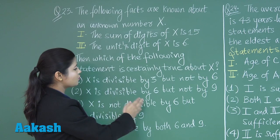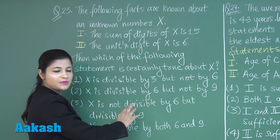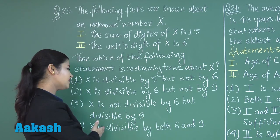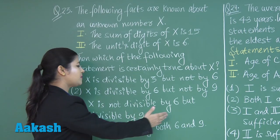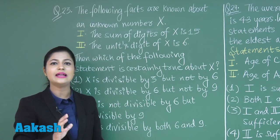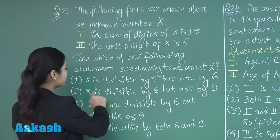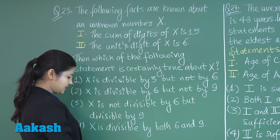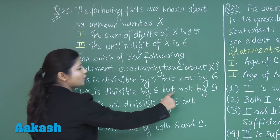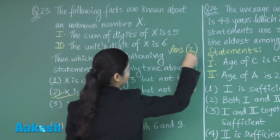Coming to option 3 — x is not divisible by 6 but divisible by 9 — this is not right because we know x is divisible by 6. The last option states x is divisible by both 6 and 9, which we cannot confirm. So only option 2 is the correct answer: x is divisible by 6 but not by 9. The answer for this question is option number 2.